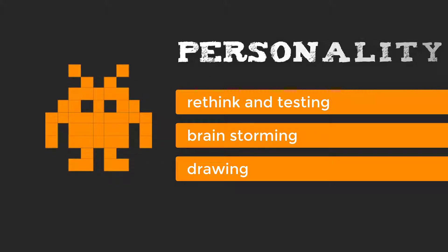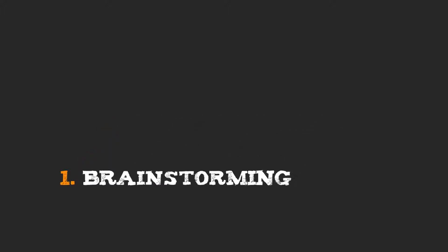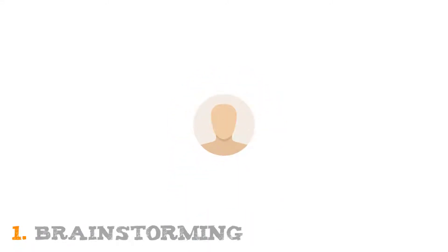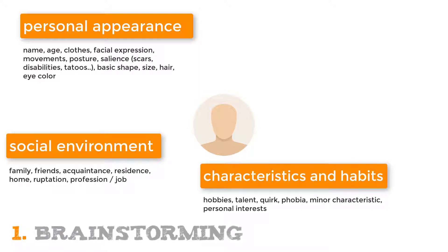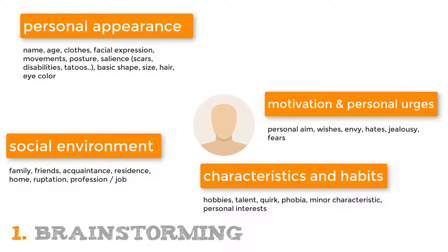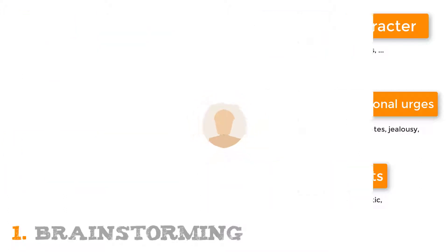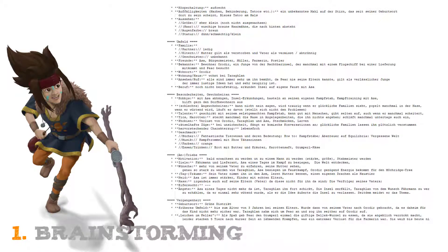However, I would definitely start with brainstorming. Before we can begin to design, we should know what kind of character we need. Take a sheet of paper and a pencil and make a mind map by noting down special characteristics. It's important to create a nice profile covering: personal appearance, social environment, characteristics and habits, motivation and personal urges, and the past of the character. Search as many references as possible. We have done this as well with our main character of Quartex.